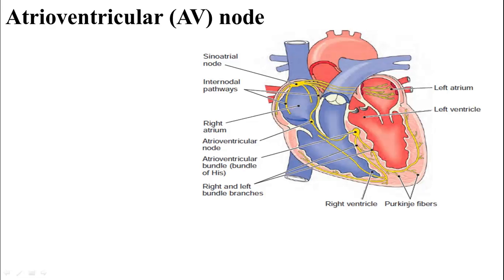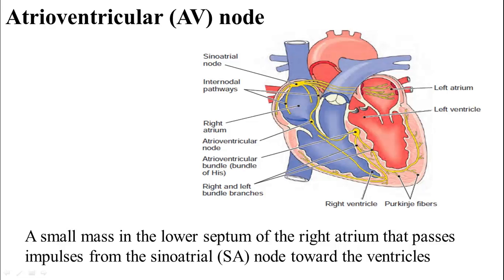The heart muscle cells are highly specialized to perform specific functions, creating the heart rhythm. The atrioventricular node, or AV node, is a small mass in the lower septum of the right atrium, passing impulses from the sinoatrial node to activate the ventricles.